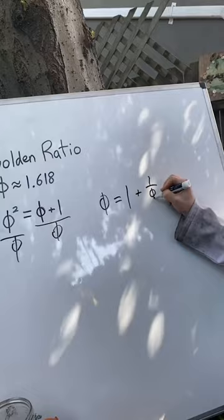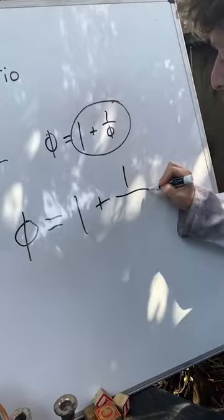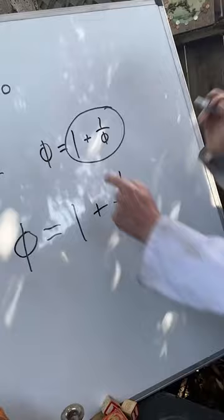And let's save this definition because we could substitute that for the golden ratio if we ever want. So now I'm going to rewrite that golden ratio equals one plus one over the golden ratio. But we can take this golden ratio and substitute it for our new definition of it.